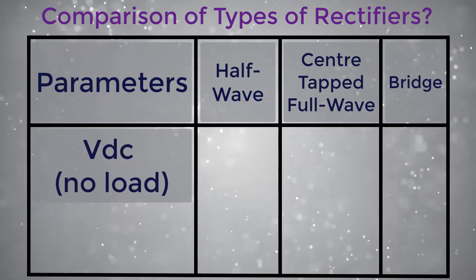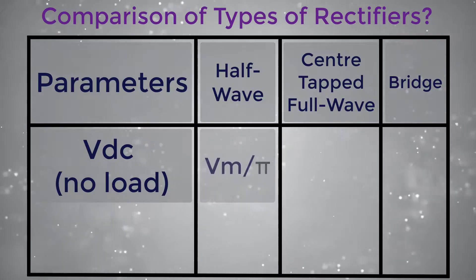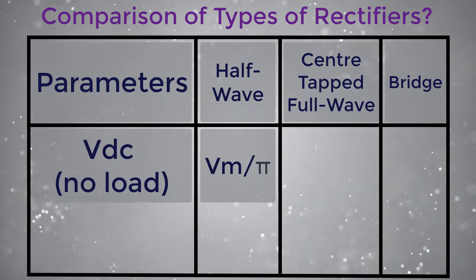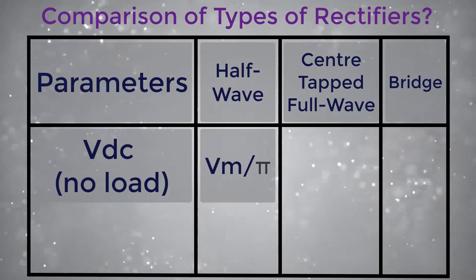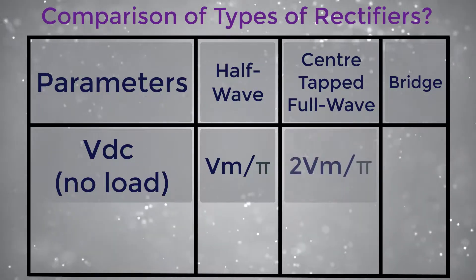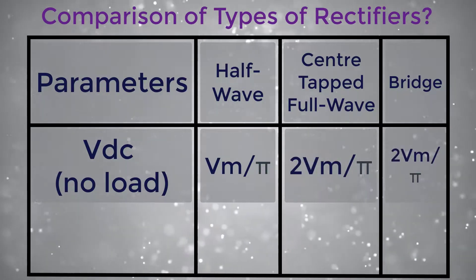Vdc no load: for half wave it is Vm divided by π, whereas for center tapped full wave and bridge it is 2Vm divided by π.